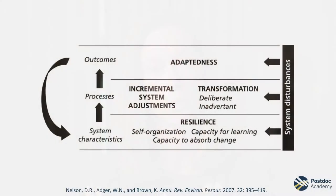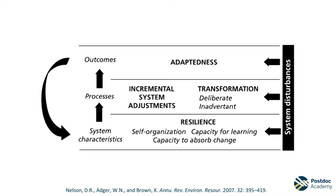Adaptation can be represented by the relationship between the characteristics that make you resilient, the actions you take, and what happens as a result. These three components, which are described in the ecology literature as system characteristics, adaptation processes, and outcomes, are represented here. Let's walk through each step.